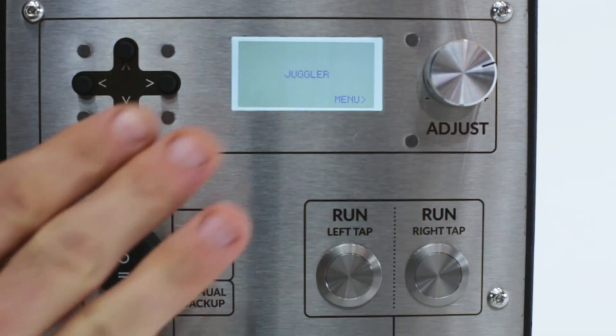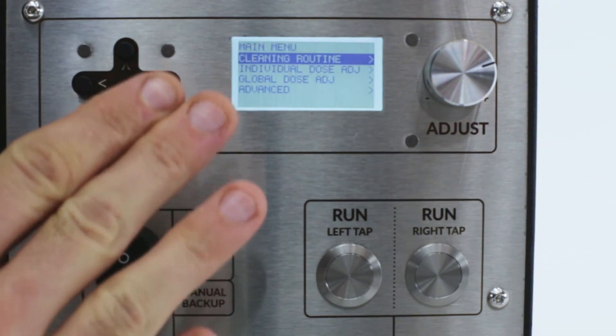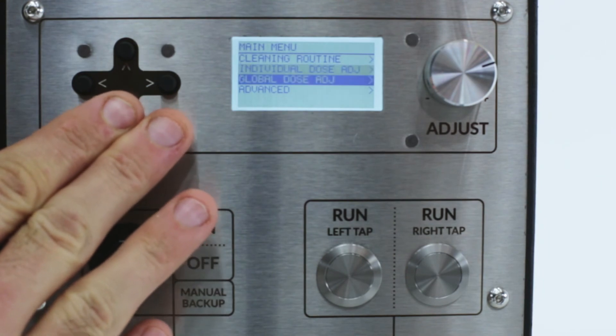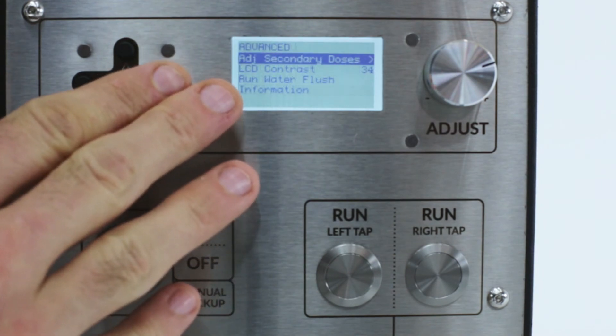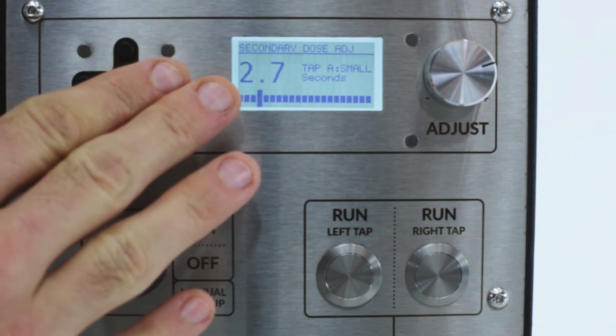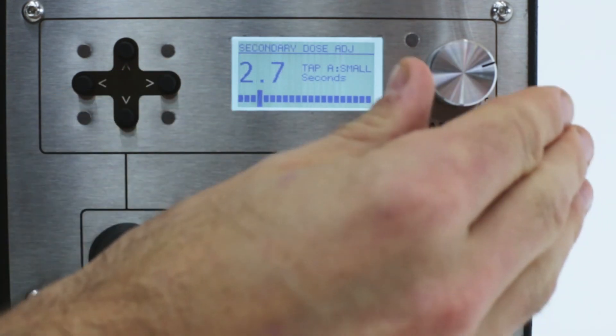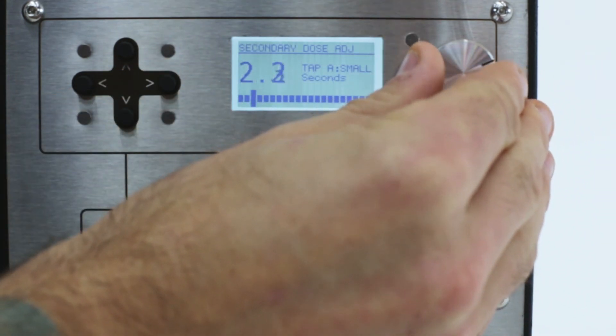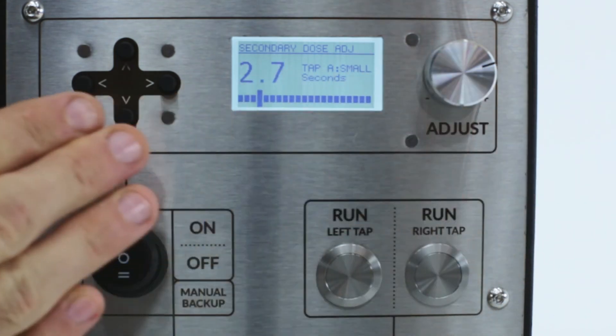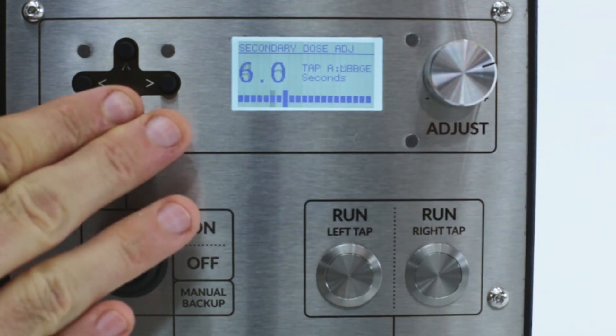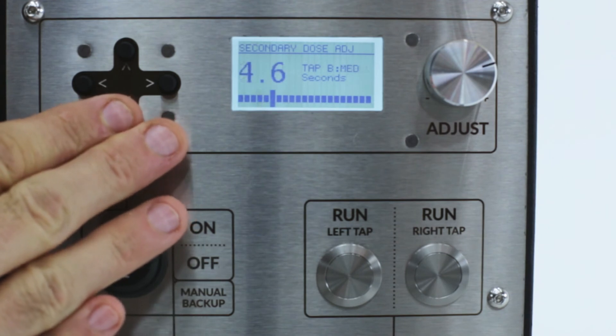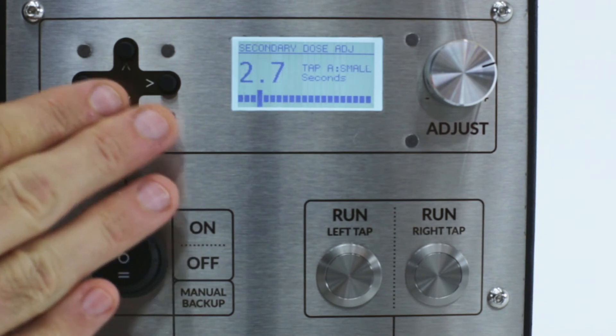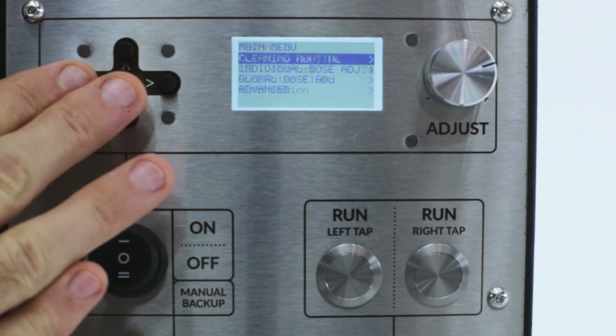To adjust the secondary dose, press the right arrow to enter the menu. Press the down arrow to advanced, then press right to enter the secondary dose adjustment menu. Press right again to enter adjust secondary doses. Adjust each secondary dose in the same way that you set the primary doses. To save the changes, press the left arrow until you reach the home screen.